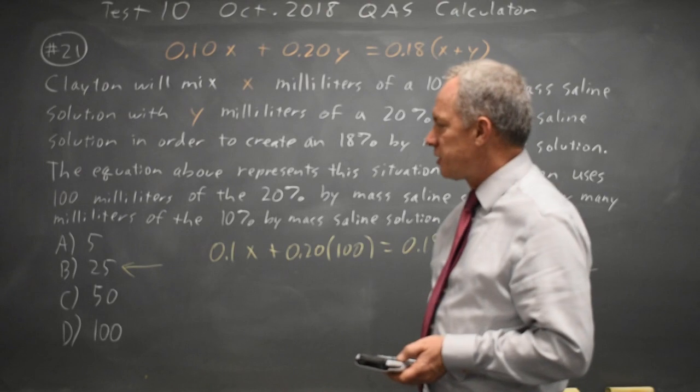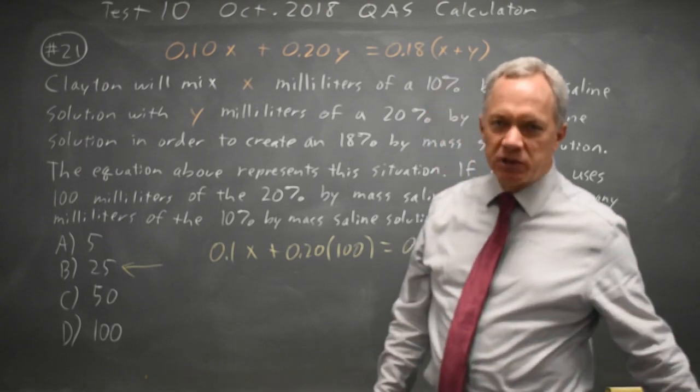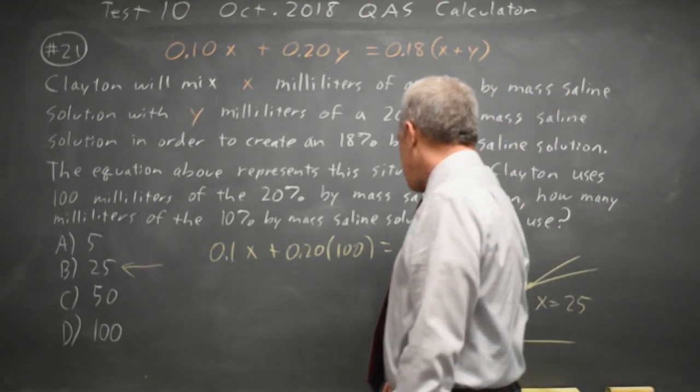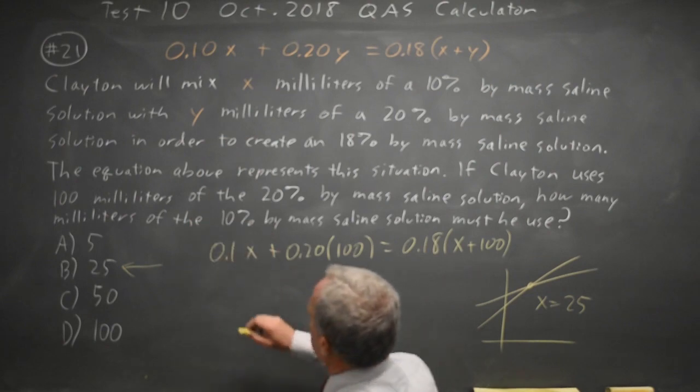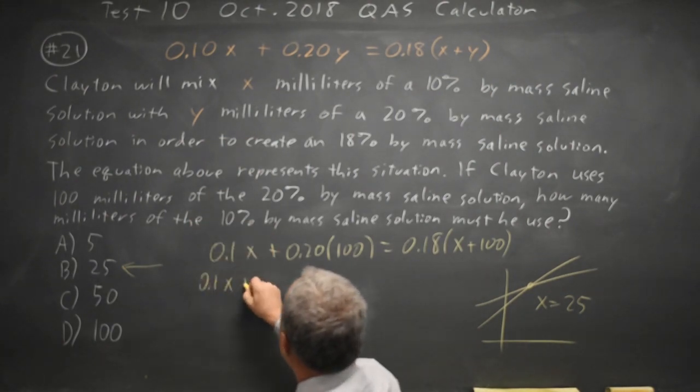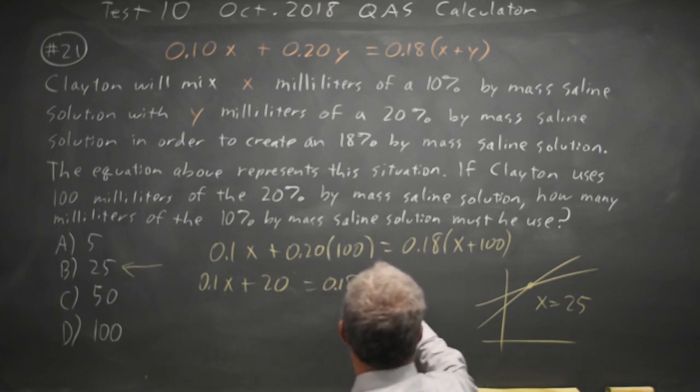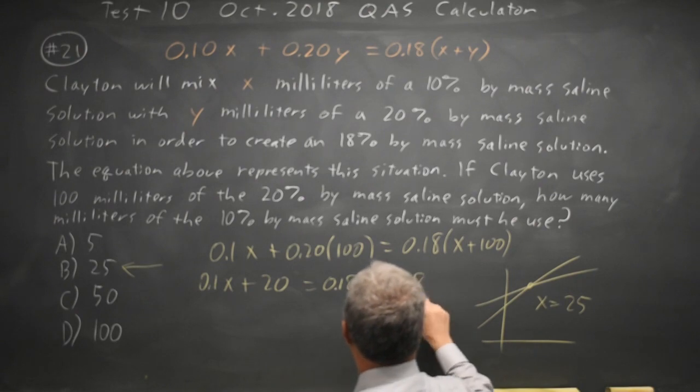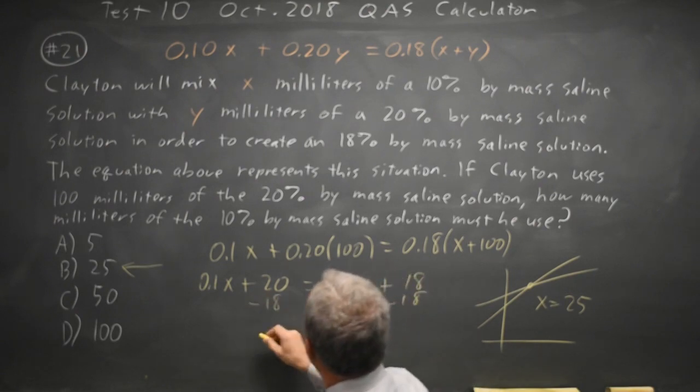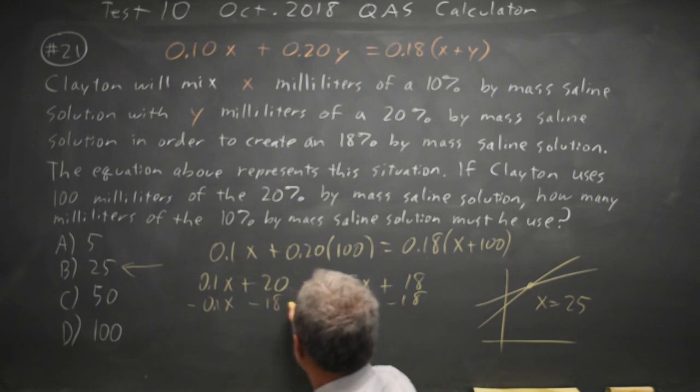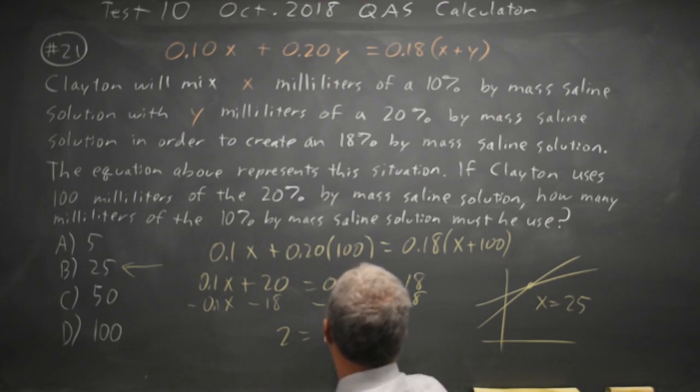We can also do this by hand. I have .1x + .2(100) = .18x + .18(100) = 18. Subtract 18 from both sides, subtract .1x, and I get 20 - 18 = 2 equals .08x.